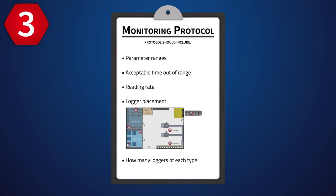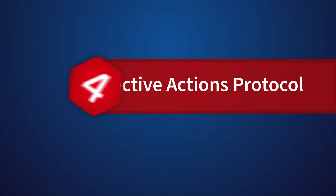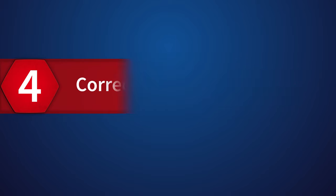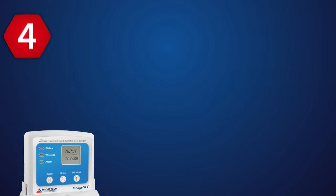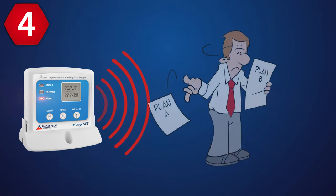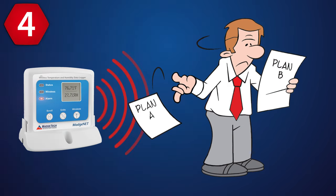Note how many data loggers of each type you require to monitor each designated food processing zone. Another document to add to your HACCP plan is a corrective actions protocol. In this, you should outline the actions that will be taken if thresholds of desired readings are exceeded, or safety of the food is otherwise compromised.